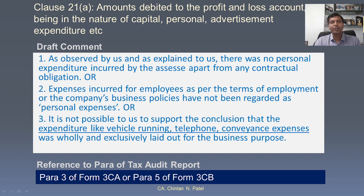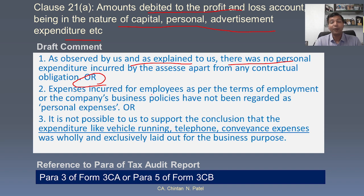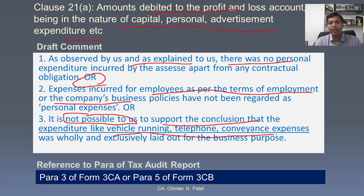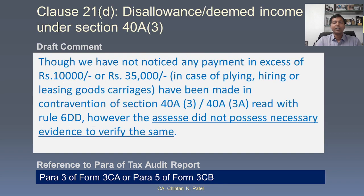Moving to clause-wise information: Clause 21A talks about amounts debited to the profit and loss account being in the nature of capital or personal expenditure. You can mention comments like 'there is no personal expenditure as informed to us,' or in case of any expenditure related to employment arrangements, you can mention it as a policy. If it is not possible to verify, mention expressions like vehicle running, telephone, conveyance, and that should be mentioned accordingly.